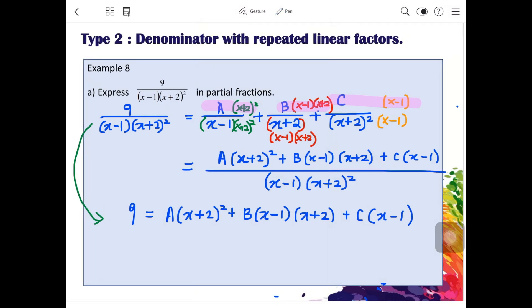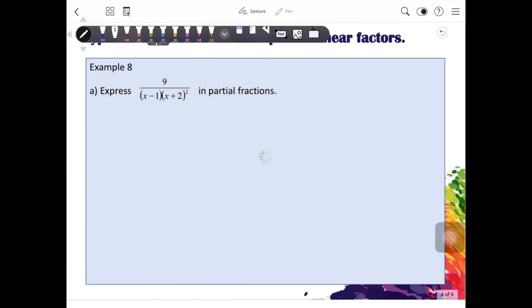So, I have not enough space here. Let me copy it again here for us. 9 is equal to A, x plus 2 squared plus B, x minus 1, x plus 2 plus C, x minus 1. So, we will let x to be the first root, which is 1.